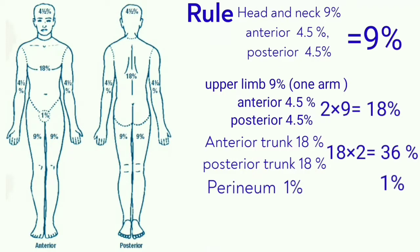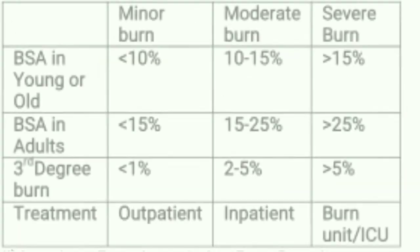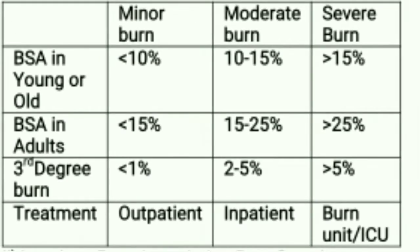The perineum is given 1%. For the lower extremities, the anterior part of the leg is 9% and the posterior is 9%, so one leg is equivalent to 18%. With two legs, multiplied by 2, you get 36%. If you add all these percentages together, you should get 100%.